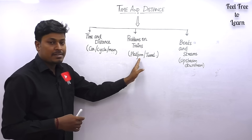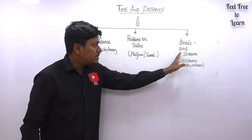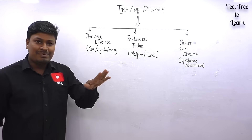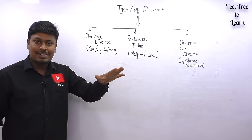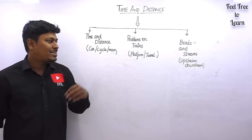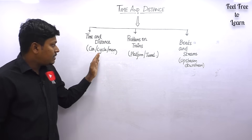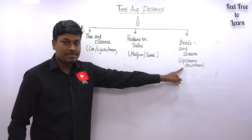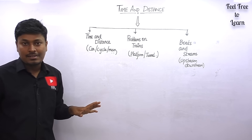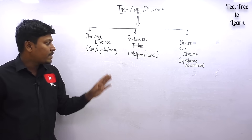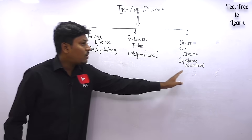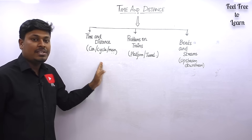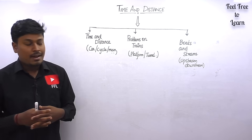The last category is boats and streams, which is completely different from the other two. While basic questions and train problems share about 90% of the same concepts, boats and streams is entirely different — based on upstream, downstream, still water. Learn basic questions first, then concentrate on trains, and only after getting strong on those two topics move on to boats and streams.